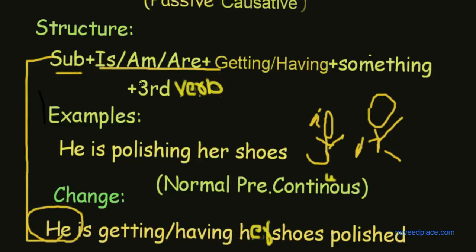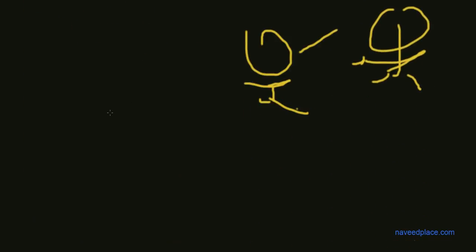Then we have to use is/am/are. If our subject will be singular, for example say he or you can say she, it, so it will be definitely singular. So what we use? We use is.